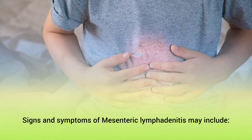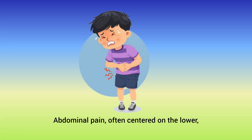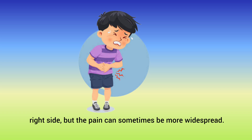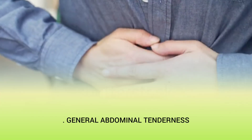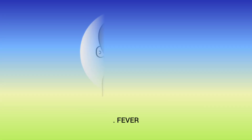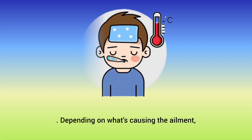Symptoms: Signs and symptoms of mesenteric lymphadenitis may include abdominal pain, often centered on the lower right side, but the pain can sometimes be more widespread. General abdominal tenderness and fever, depending on what's causing the ailment.